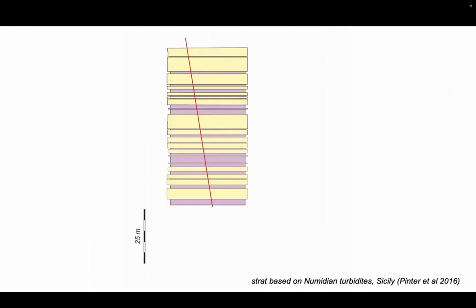So let's see how this works. Here's a stratigraphic succession based on some real stratigraphy, a binary succession of sandstones and claystone-siltstones, in other words shale, shown here in yellow and purple respectively.